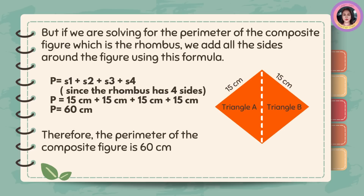But if we are solving for the perimeter of the composite figure, which is the rhombus, we add all the sides around the figure using this formula. Perimeter is equal to S1 + S2 + S3 + S4, since the rhombus has four sides. 15 cm + 15 cm + 15 cm + 15 cm = 60 centimeters. Therefore, the perimeter of the composite figure is 60 centimeters.